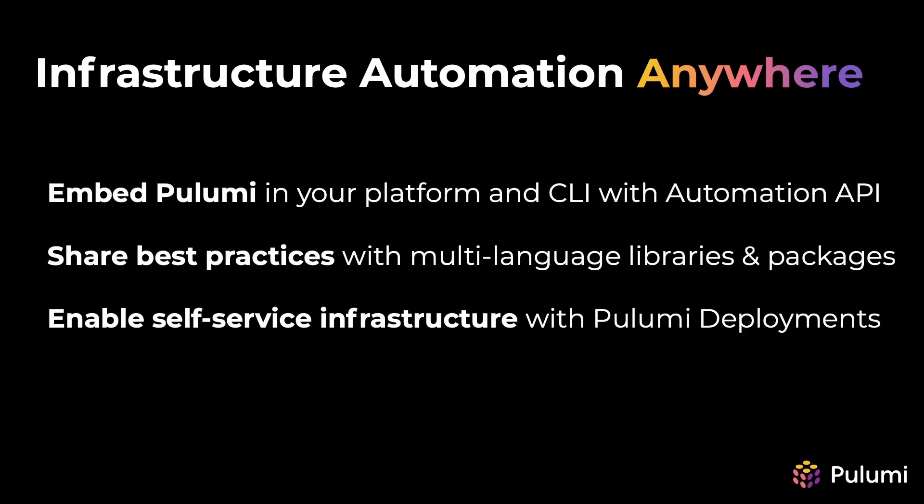Pulumi also has features that empower organizations to deploy cloud infrastructure at scale. Using Pulumi's innovative Automation API, platform teams can build web and command line tools that enable development teams to deploy their workloads via a self-service model. Because Pulumi programs use real programming languages, platform teams can also share production-ready building blocks in standard language packages, enabling development teams to consume these packages in their own Pulumi programs using the tools they already know. Pulumi Cloud also enables self-service infrastructure via Pulumi Deployments, a fully-managed platform for provisioning infrastructure at scale, giving organizations a fast, simple, secure path to set up infrastructure pipelines.